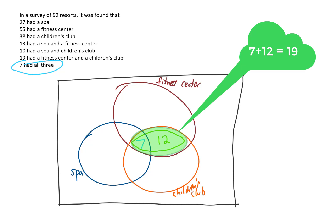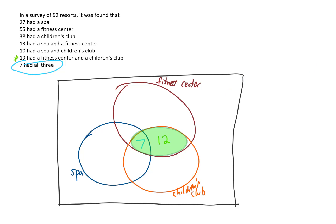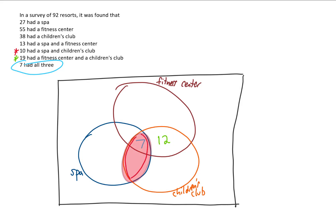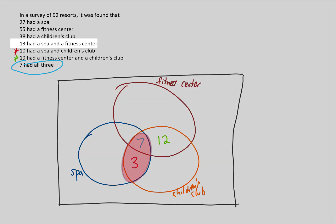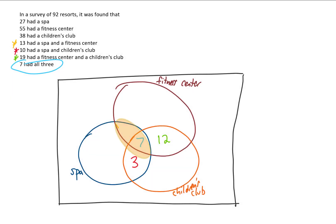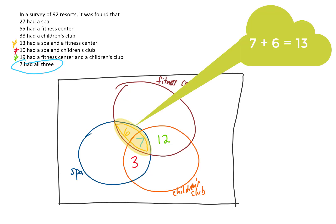Next, 10 resorts had both a spa and a children's club. We already have seven in that overlap, so that leaves three in the spa-and-children's-club-only region — and seven plus three does add up to 10. Then 13 resorts had both a spa and a fitness center. We already have seven in the middle, so 13 minus 7 leaves six resorts in the spa-and-fitness-center-only region, and six plus seven equals 13.